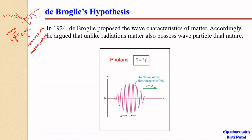In that case both particles are considered as matter, and so from this Compton experiment we could explain that waves or light is also behaving like matter. So one quantum or one photon, as suggested by Einstein, is nothing but matter with a very small minuscule mass, behaving like matter in the Compton scattering experiment.